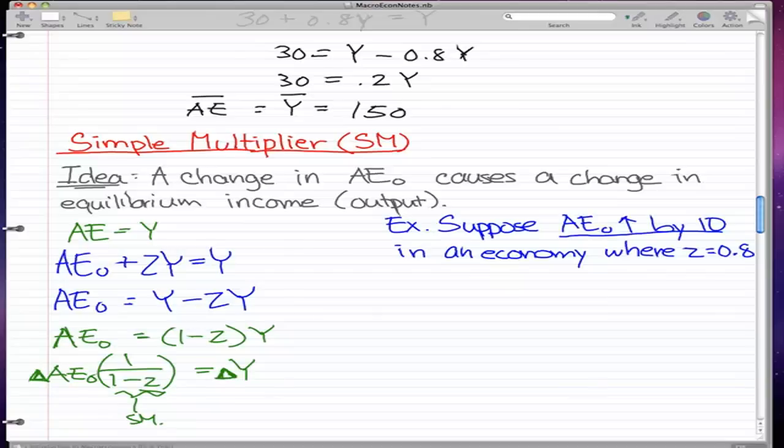Suppose that autonomous expenditure increased by 10 in an economy where Z equals 0.8. So the change in AE0, the change, we increased, so that's a change, so the change is 10. This is how we're going to calculate change in Y or change in the equilibrium income.